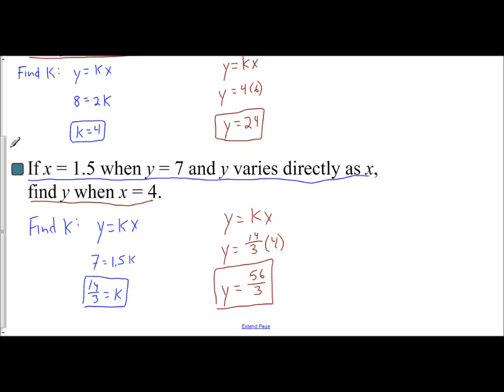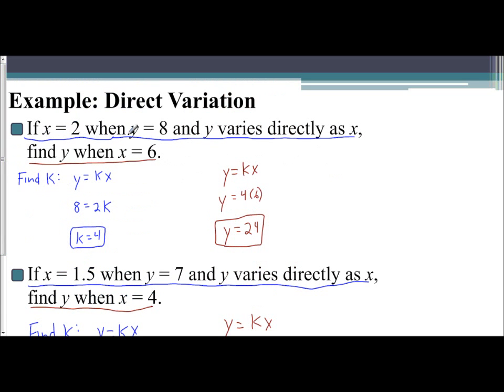So this is the way you do direct variation. The way it's set up here is we're going to use the first part to find our constant of variation, and then use that constant to find the unknown value.